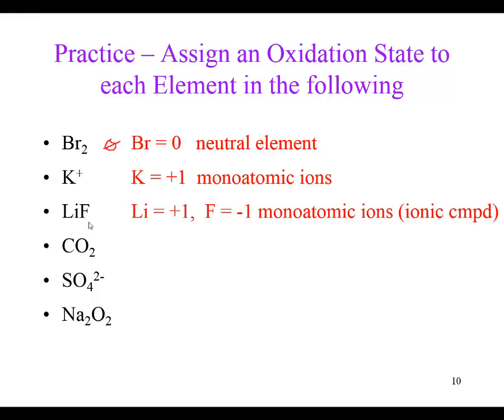If we look at carbon dioxide, we didn't have a rule for carbon, so I'm going to look at the oxygen. Oxygen is in a compound combined with carbon, so it can't be zero. It's not a peroxide, so it can't be negative one. It must be a negative two - so I have a negative two for the oxidation number for each oxygen, giving a total of negative four for both oxygens combined.